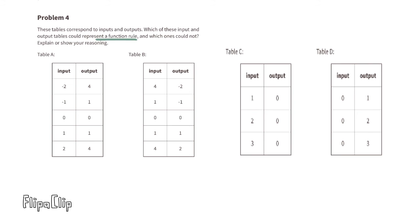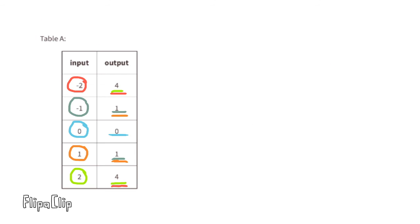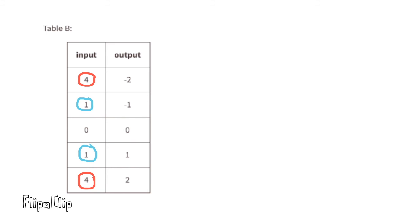All of the inputs for table A are different. As long as the inputs are all different, you can have some outputs the same. So table A represents a function rule. Some of the inputs for table B are the same, yet they have different outputs, and that's not possible. Table B does not represent a function rule.